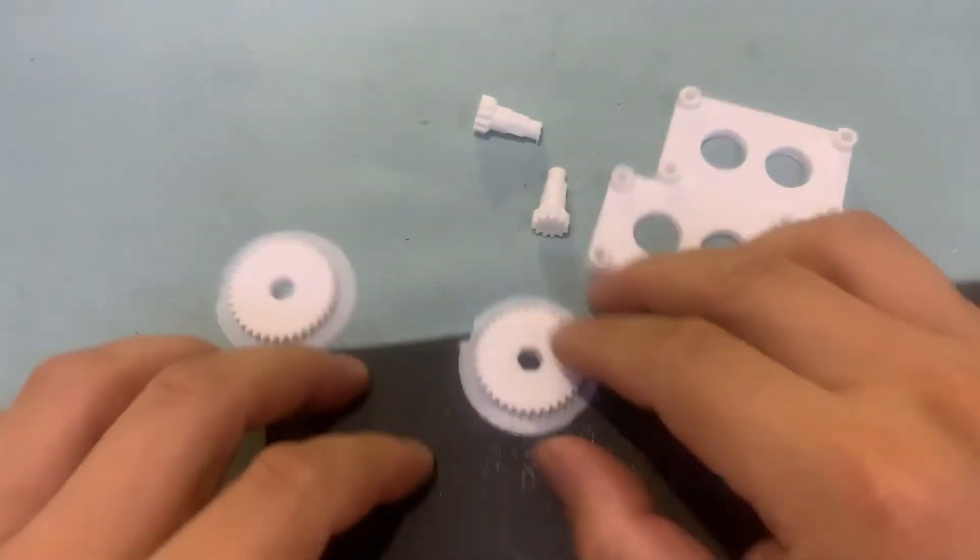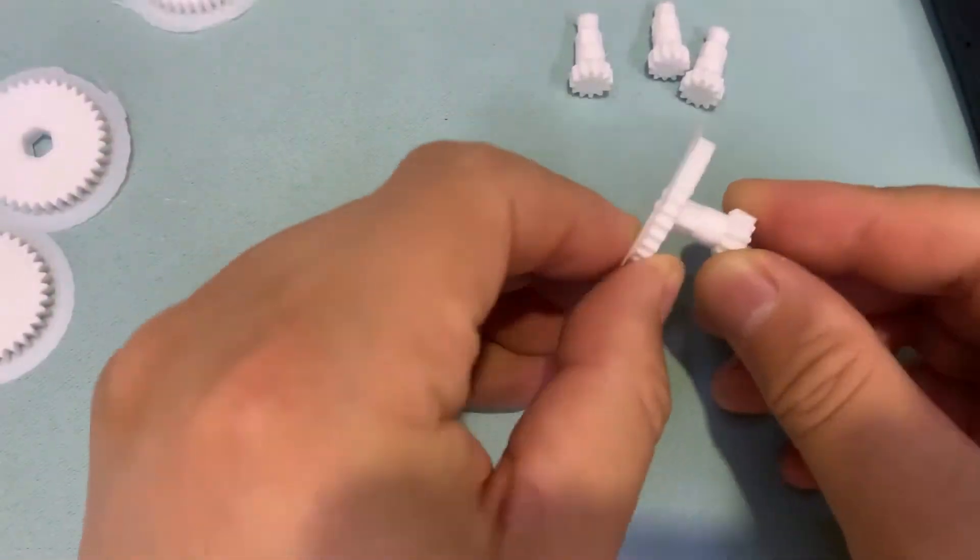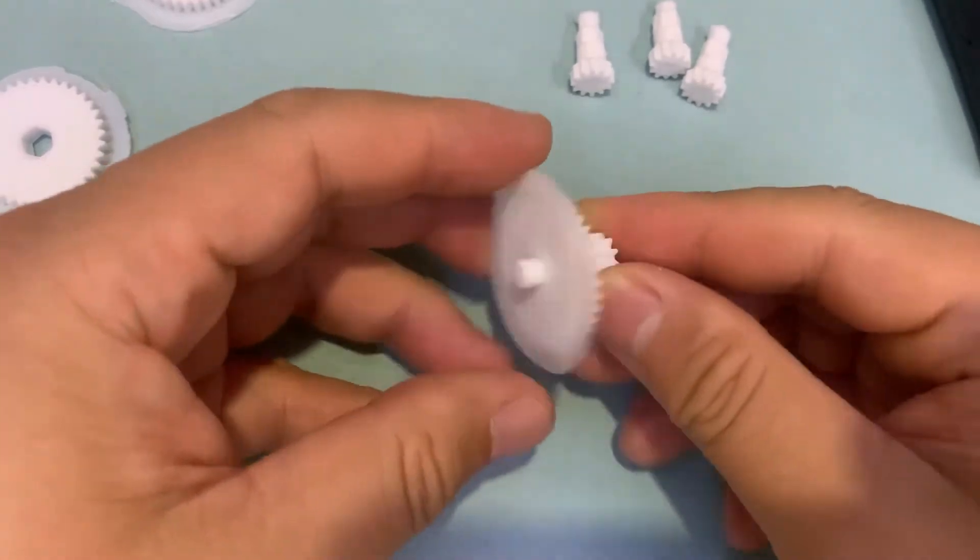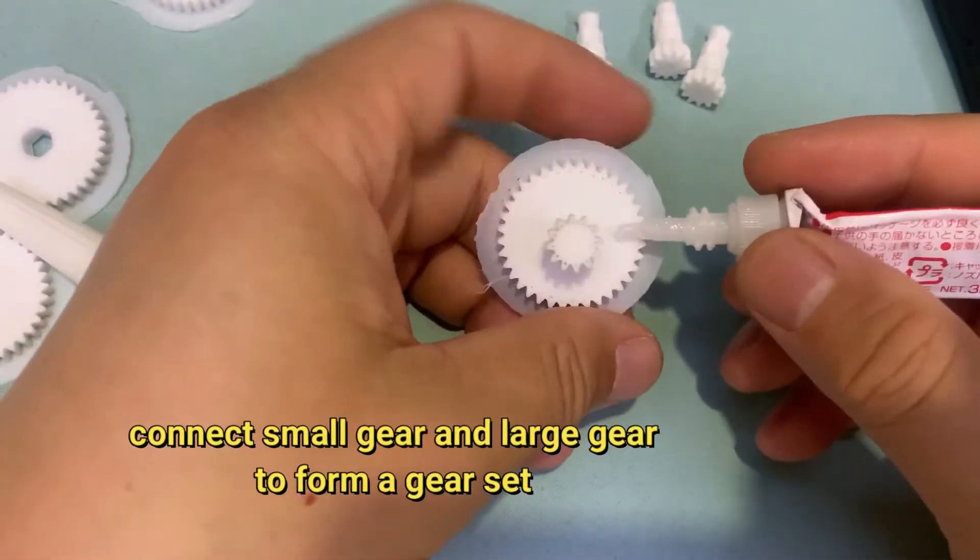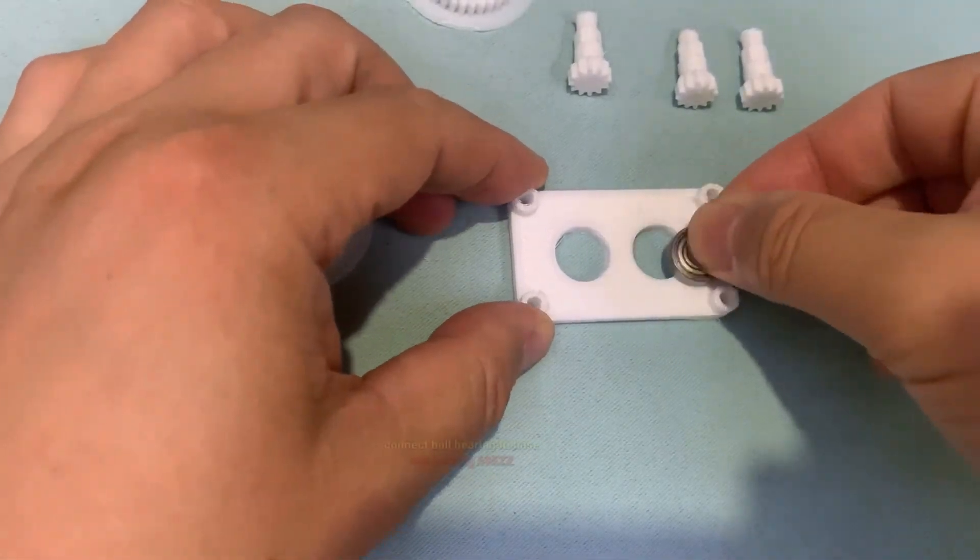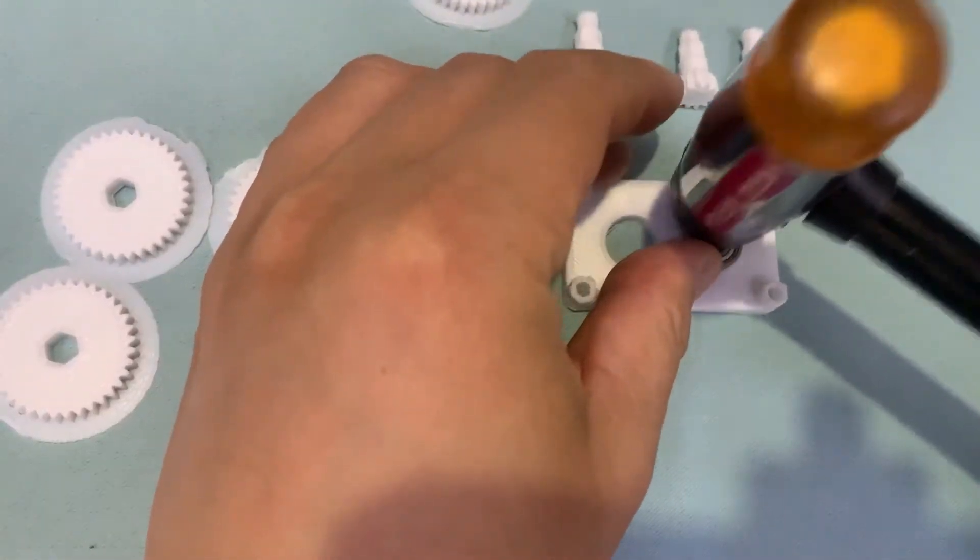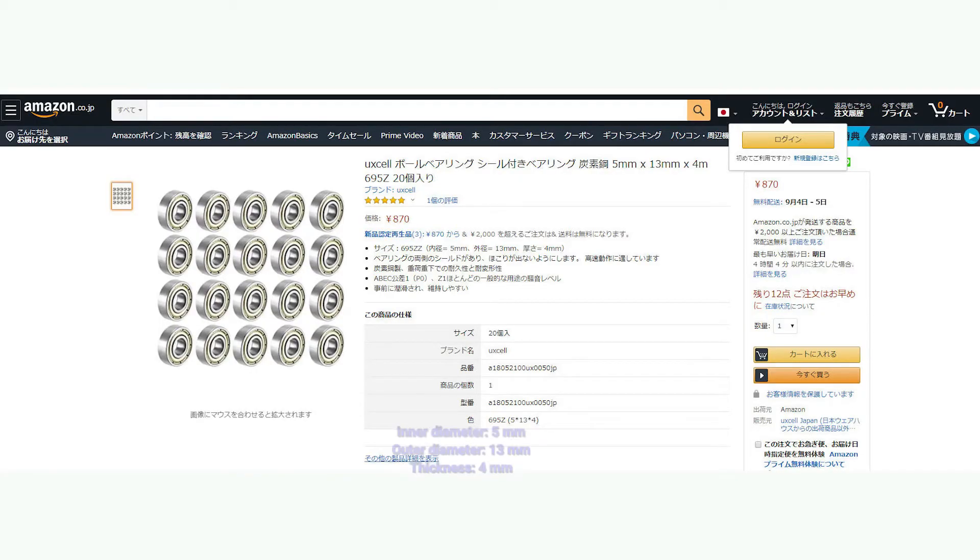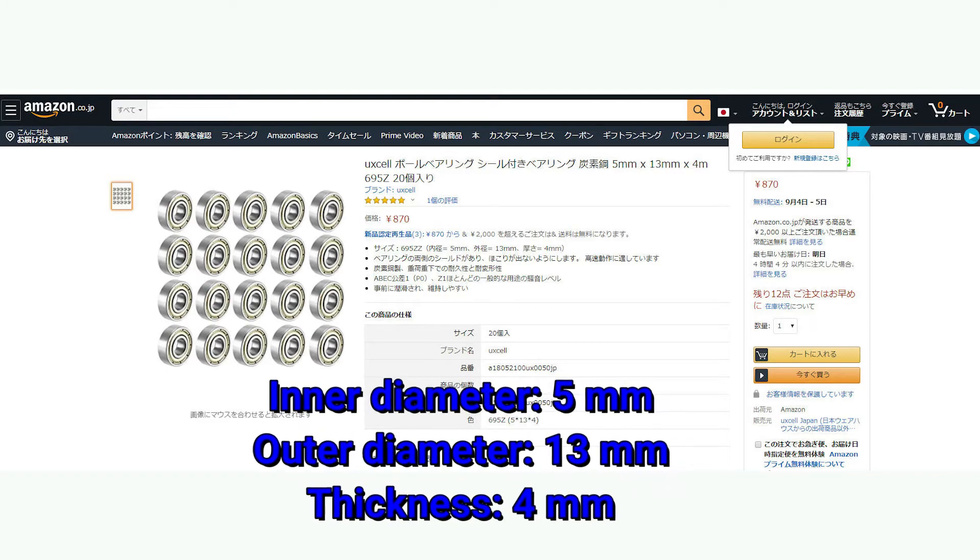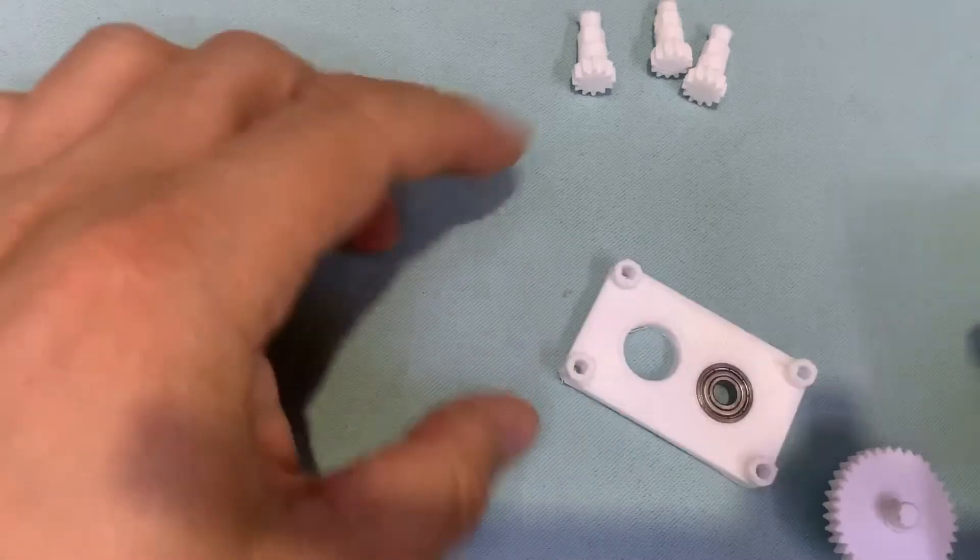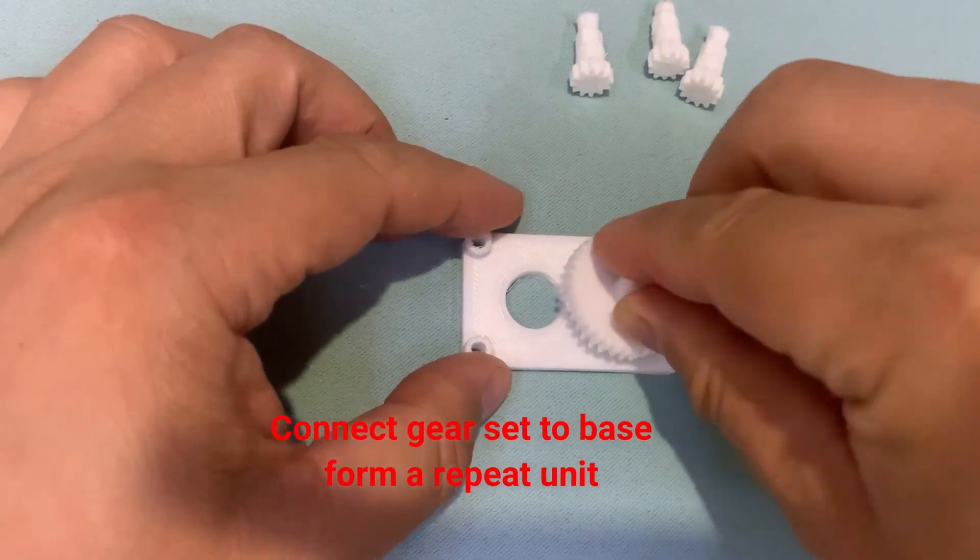Clean the printed parts if it is necessary. Connect the gear 12 to gear 36 together to form a gear set. Connect a ball bearing 695ZZ to the base, which the inner diameter is 5, outer diameter is 13, and the thickness is 4 mm respectively. Connect the gear set to base which makes them as a repeat unit.